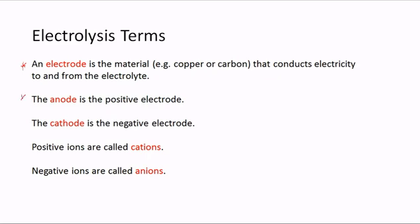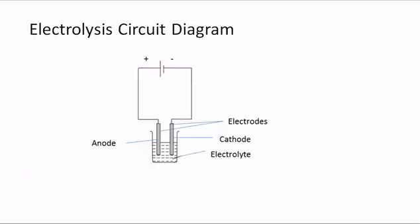The anode is the positive electrode — that is, the copper or carbon connected to the positive terminal of the cell or battery. The cathode is the negative electrode, connected to the negative terminal of the cell or battery. Positive ions in an electrolyte are called cations, and negative ions are called anions.